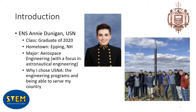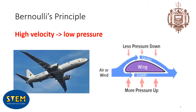In today's demo, we will look at one of the main principles of aerospace engineering, which is called Bernoulli's principle. This principle explains why and how things like airplanes can fly. Bernoulli's principle, in its simplest terms, says that high velocity leads to low pressure. In other words, the faster the air is moving, the lower its pressure.